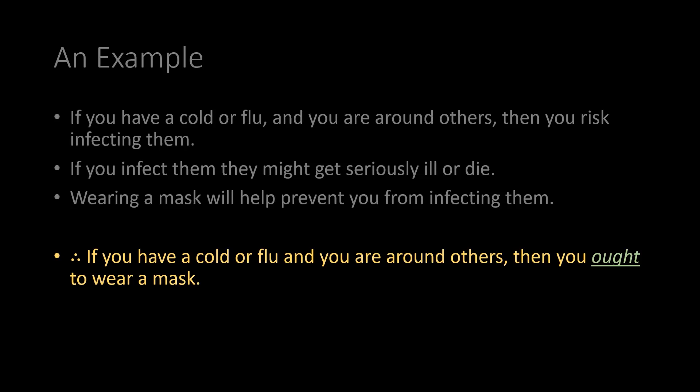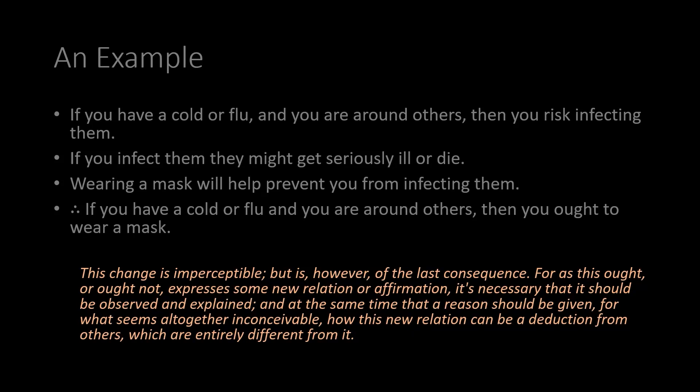As Hume tells us, this shift from is-premises — premises that describe the world — to an ought-conclusion that prescribes some action is, in Hume's words, imperceptible but of the last consequence. For as this ought or ought not expresses some new relation or affirmation, it's necessary that it should be observed and explained, and a reason should be given for what seems altogether inconceivable: how this new relation can be a deduction from others which are entirely different from it. In other words, how do you get an ought — a prescriptive conclusion — out of a collection of descriptive is-premises? The person who wants us to accept this conclusion based on these premises needs to provide an explanation as to how this makes sense.